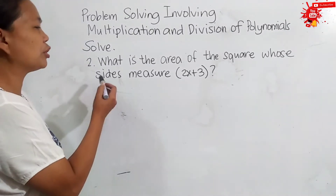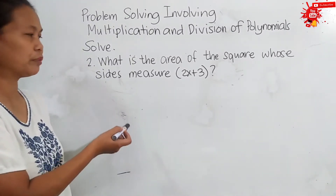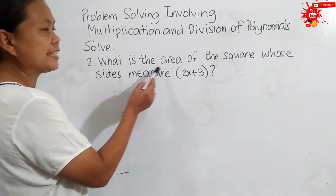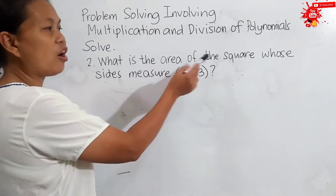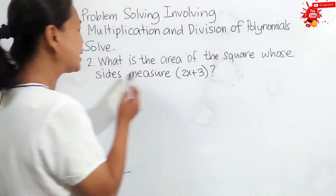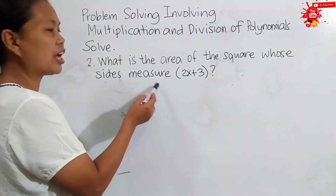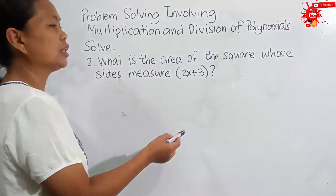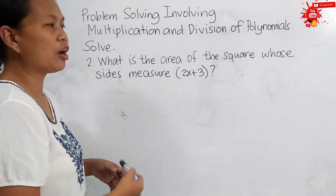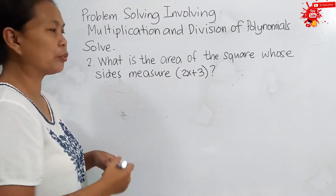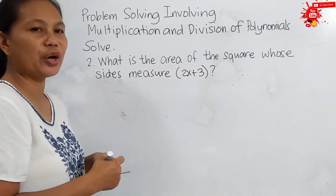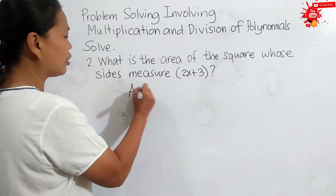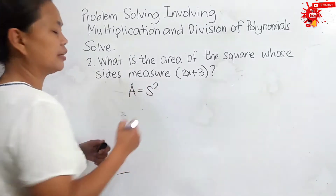Let's have example number 2 for problem solving. The question is: what is the area of the square whose sides measure 2x plus 3? It involves the area of the square, so we need the formula for finding the area of the square. The formula is A equals S squared.